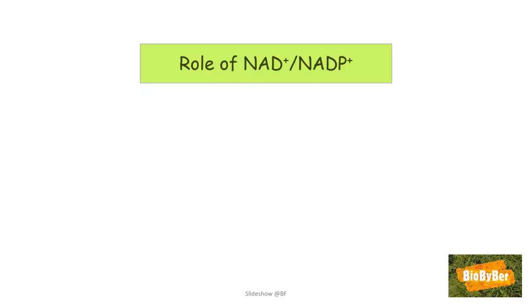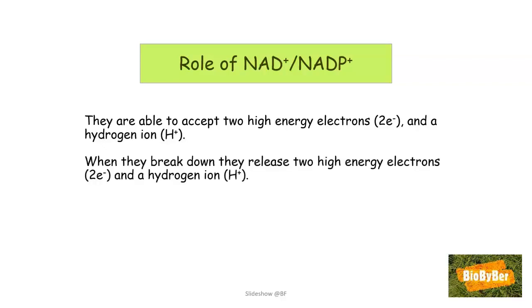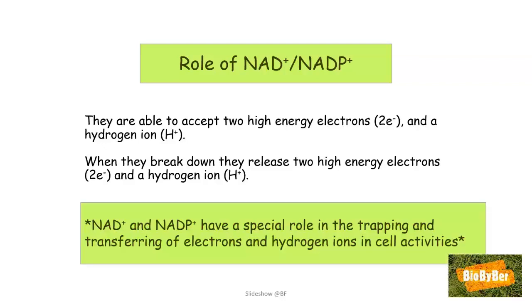Now what is the role or job of NAD plus or NADP plus? Well, these two chemicals are able to accept two high energy electrons, two high energy particles that are negatively charged, and a hydrogen ion, a H plus or proton. And when they break down the reverse happens. They are able to release two electrons and a hydrogen ion. So in a nutshell, according to the syllabus, NAD plus and NADP plus have a special role in the trapping and transferring of electrons and hydrogen ions in cell activities.